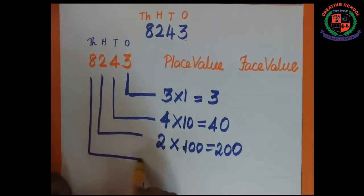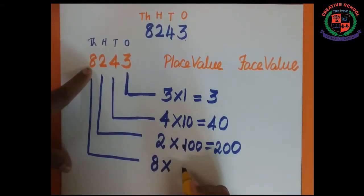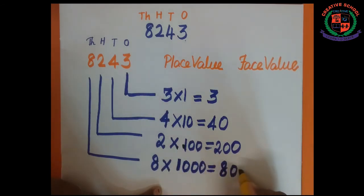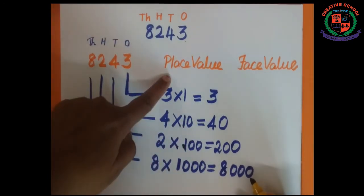We have to write here 8. 8 is in thousands place, so we have to multiply by 1000, so the answer is 8000. These are the place values.